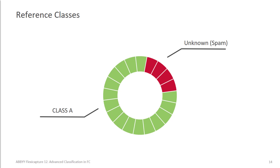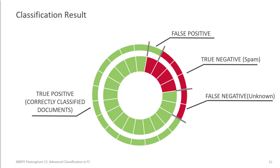Let's discuss in more detail how precision and recall are measured. Imagine this is our document flow. The green cells are documents that were assigned reference class A and were correctly classified as A. The red cells reveal that spam documents appeared in the document flow and must be left unknown. The second circle shows the classification results we received, where green cells mean documents classified as A and red cells mean documents that were not classified and stayed unknown.